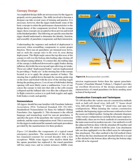Nomenclature. All riggers should become familiar with Parachute Industry Association (PIA) Technical Standard 100 (TS-100), Standardized Nomenclature for Ram Air Inflated Gliding Parachutes—see Appendix I. This document is the official language and terminology used for ram air parachutes, specifying the parts of the parachute, the various construction methods, and the seam configurations used. Figure 2-6 identifies the components of a typical round emergency parachute. The nomenclature of this design has remained constant for several decades. While some riggers think the square parachute has replaced it, the round parachute still has many uses and in certain instances fulfills some mission requirements better than the square parachute.